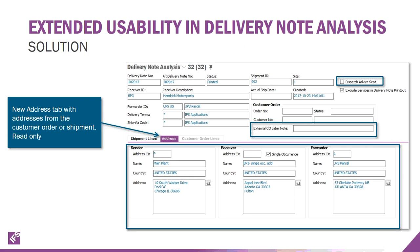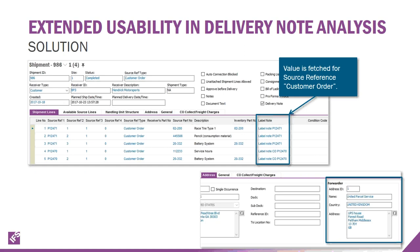Additions in the delivery node analysis include: presentation of address information related to transportation, reference to the external customer order label note, and indication of whether dispatch advice has been sent. In the shipment, there's a new capability for presentation of forwarder address and label notes on shipment lines.